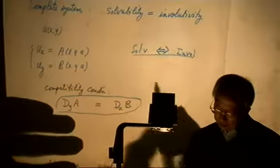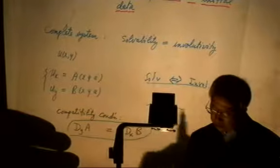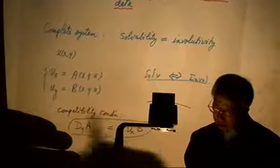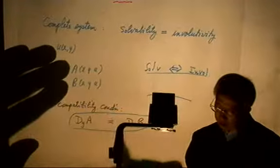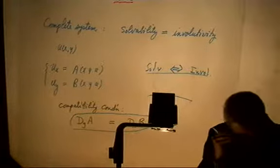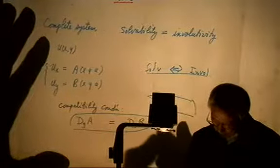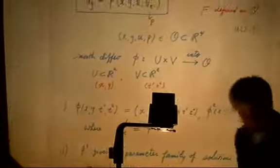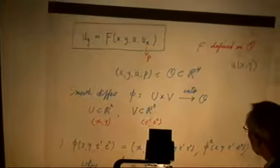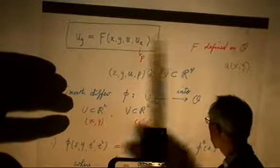Using the generalized Frobenius theorem: solvability is involutivity. By using the first theorem — the first generalization — I can decide whether there is a single solution rather than a foliation. In a three-dimensional manifold, consider an unknown function in two variables.